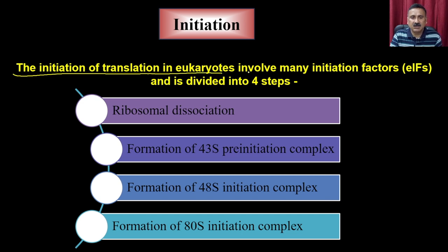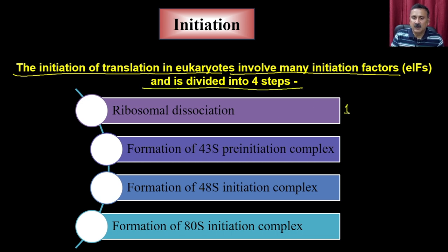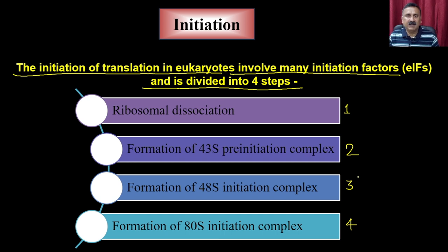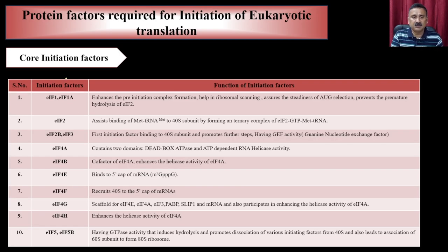Initiation of translation in eukaryotes involves many initiation factors (eIFs) and is divided into 4 stages. In stage 1, the ribosome dissociates. In stage 2, the 43S pre-initiation complex is formed. Then the 43S initiation complex is converted into the 48S initiation complex. Finally, the 80S initiation complex is formed, meaning the ribosome is fully assembled onto the messenger RNA, which then enters the elongation phase.